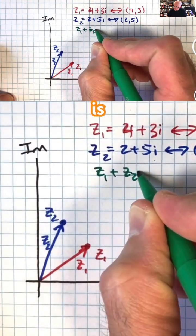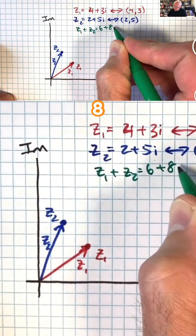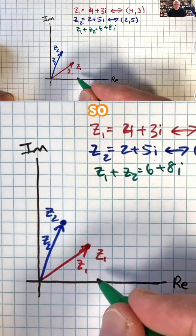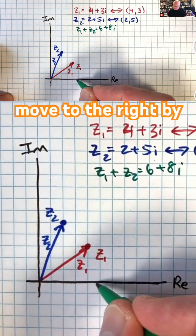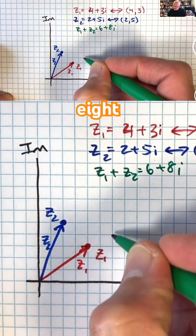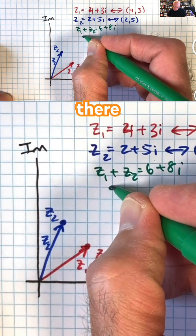Z1 plus Z2 is 6 plus 8i. So, where is that? Move to the right by 6 and up by 8. That's going to bring me to right there.